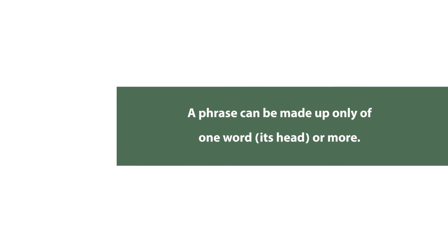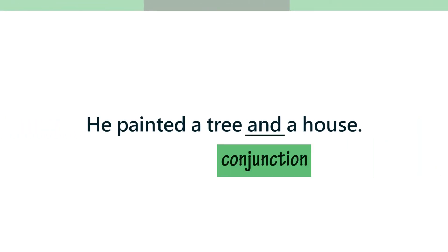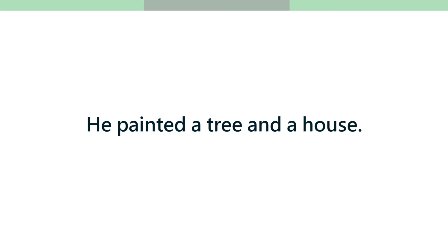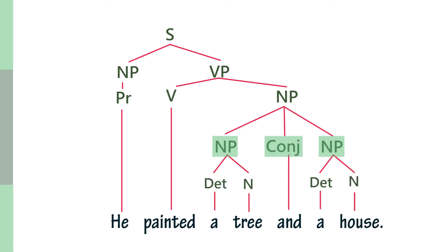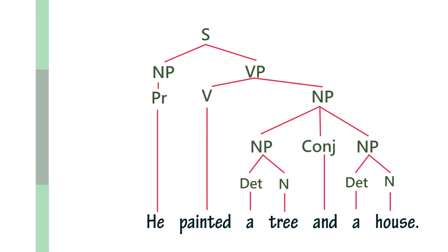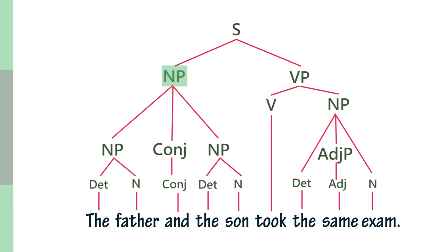When you use conjunctions, you can draw a tree for the coordination. As the object, you have a noun phrase that consists of two other noun phrases. Each of those noun phrases consists of a determiner and a noun, and they have been conjoined using the coordinating conjunction 'and.' So you get a noun phrase that consists of a conjunction and two other noun phrases.